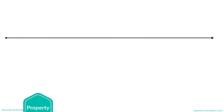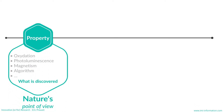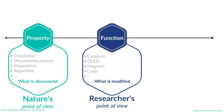We must define different types of concepts. First, I will define the property from nature's point of view. The property is what we discover — maybe we haven't done it yet, but it exists by itself. The oxidation or photoluminescent property of a molecule, the magnetism of a solid — they exist even if we haven't discovered or synthesized them yet.